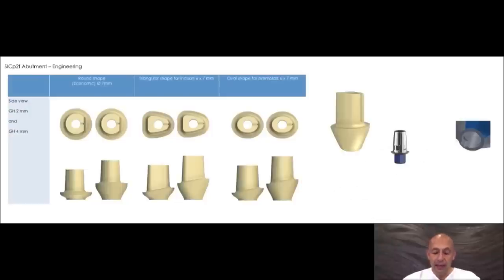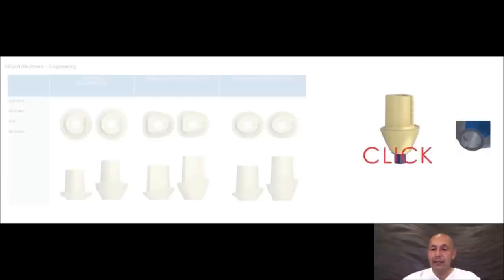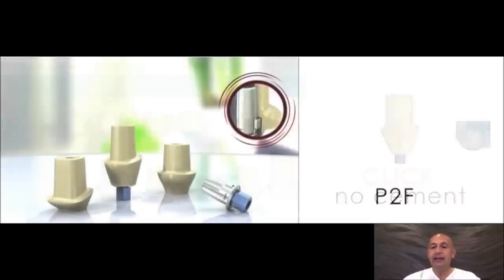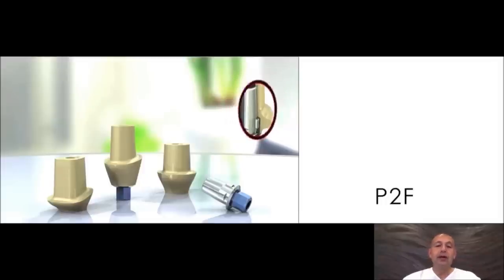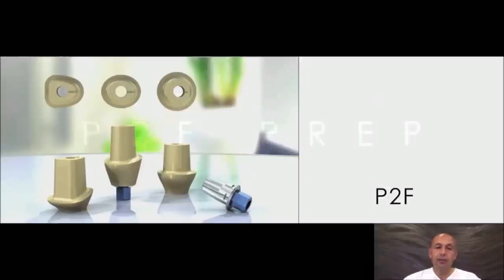We started using PEEK Optima. The system works very simply: we have the tie base already existing and we have this P2F PEEK piece which we simply place over the tie base — it clicks in with no cement whatsoever. It's very clean and easy. When we look at the P2F we can easily see that the slots lock onto the tie base, and it can if needed be taken out or placed back.